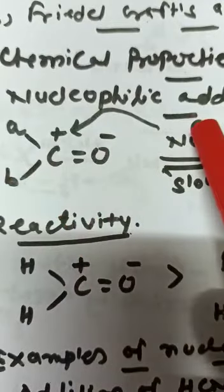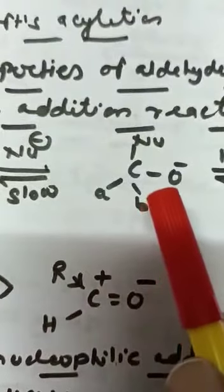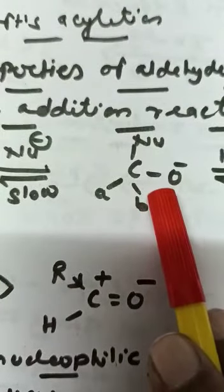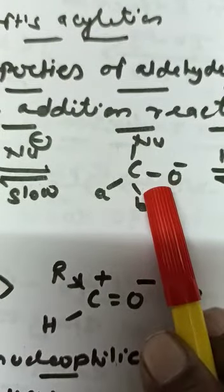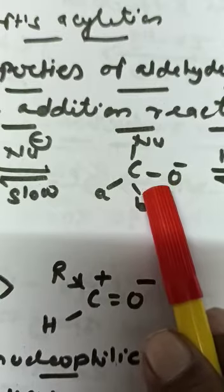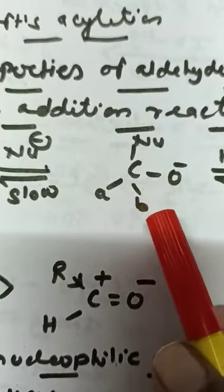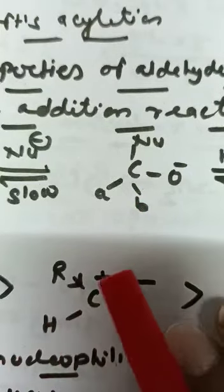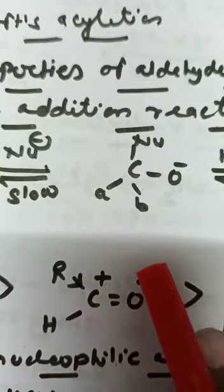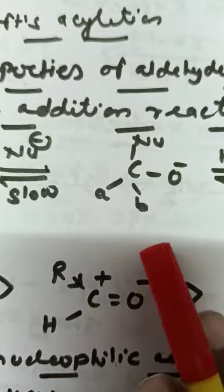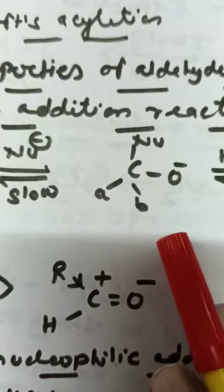The nucleophile combines with carbonyl carbon and double bond is converted into single bond. So, the hybridization is changed during the addition of nucleophile. The hybridization is changed from sp2 to sp3 and shape is also changed from trigonal planar to tetrahedral.